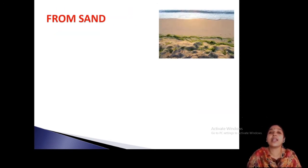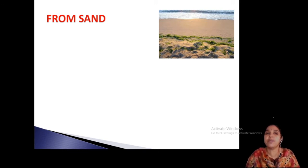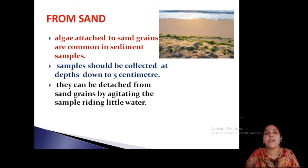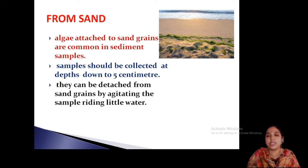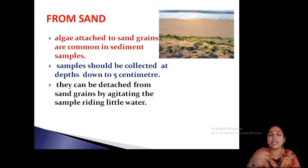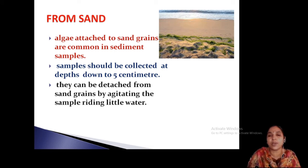Sand is another important source of algae. Seashore areas are very important, containing a huge number of algae. The algae attached to sand grains are common. Samples should be collected from a depth of 5 centimeters in the seashore or sand area. Sand grains are removed by adding a little water and agitating — speedily stirring — and the sand grains are removed and algae can be taken out.